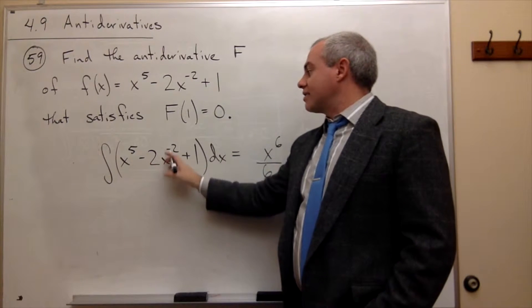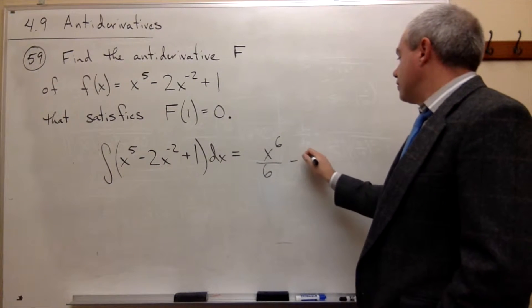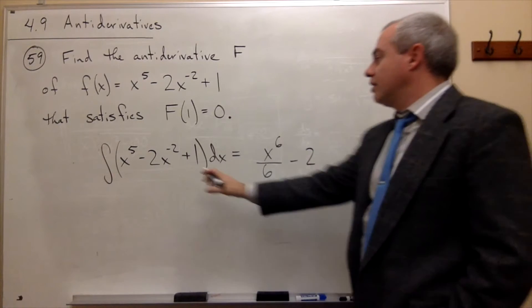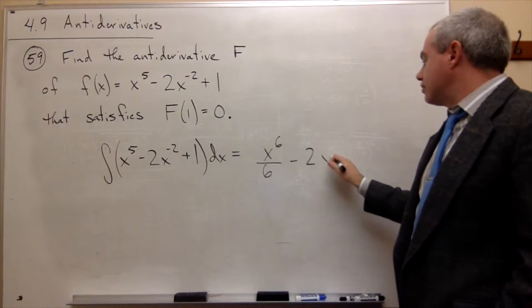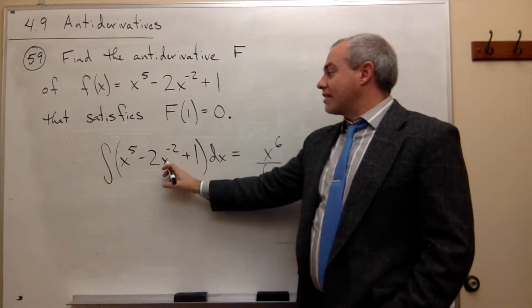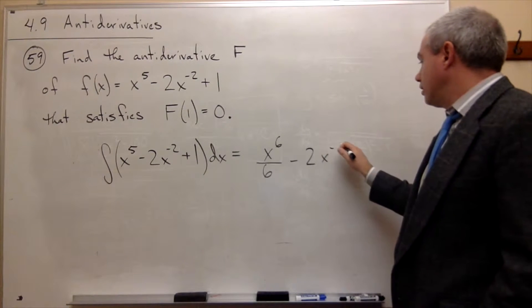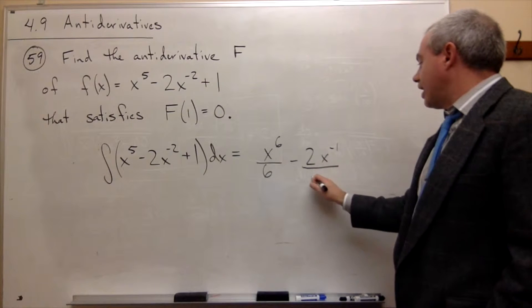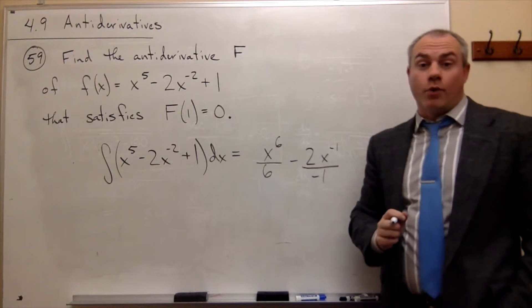For negative 2x to the minus 2, the minus 2 is constant, so I leave it, and then I get x to the, I add 1 to the old power, so I get x to the minus 1, but then I need to divide by the new power, which is negative 1.